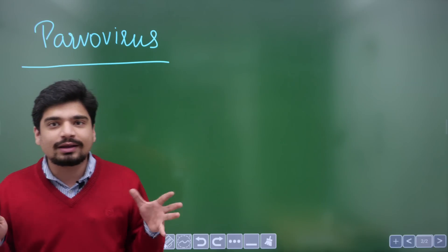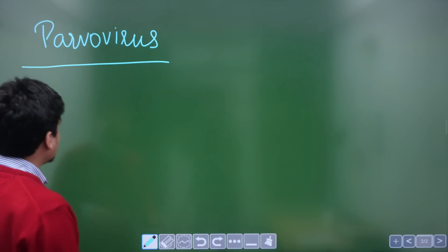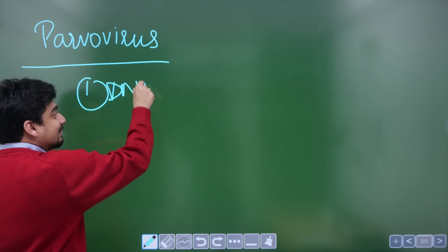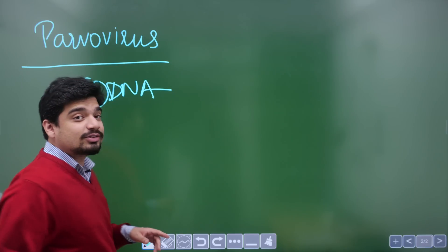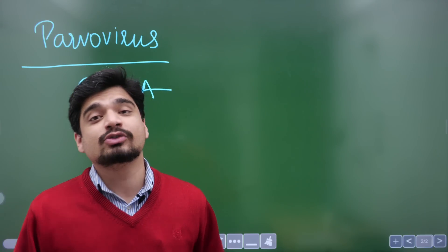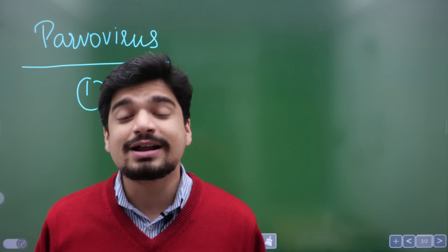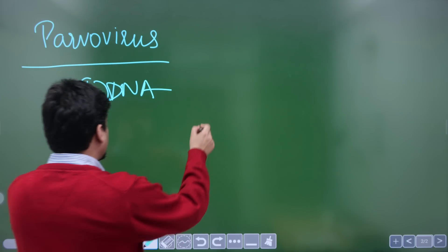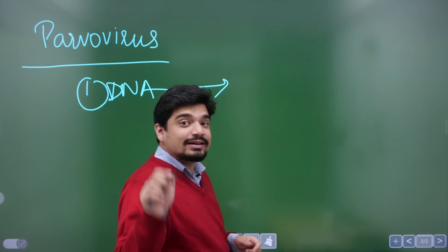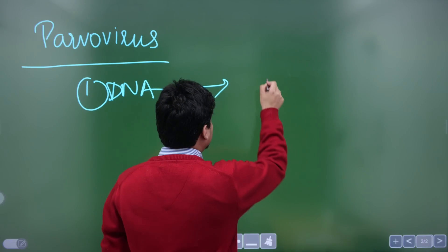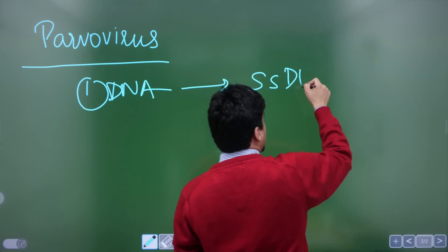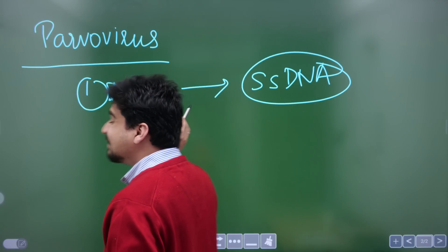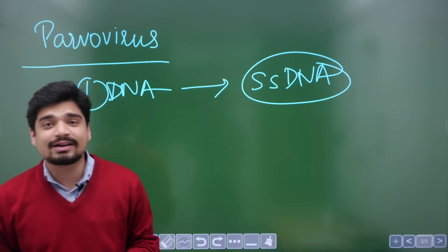Now why is Parvovirus such a favorite of examiners? The first reason — it's a DNA virus. Yes, it's a DNA virus, but normally DNA in the human body, in most organisms, is double-stranded DNA. But Parvovirus is special because it is not a double-stranded DNA virus — it's a single-stranded DNA virus. So this is one thing you have to remember from microbiology about Parvovirus: it's a single-stranded DNA virus.